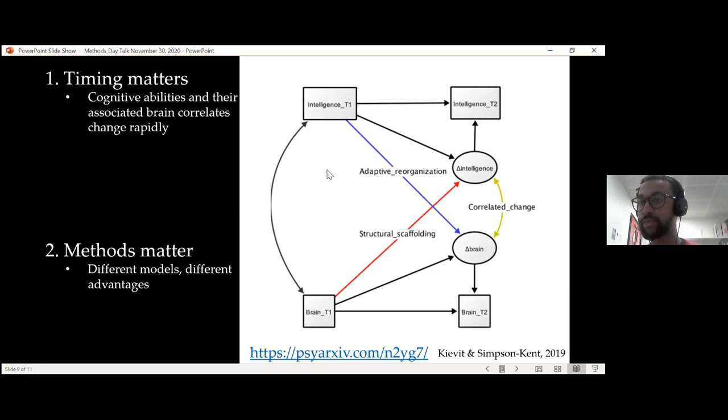And you can do the same thing for changes in brain structure based on your intelligence at time point one. So you can look at these and try to see whether people differ not only at baseline, but also if they differ significantly in slope over time, which is very cool. And of course, the more waves of data you have, the more interesting models you can fit, I would say.